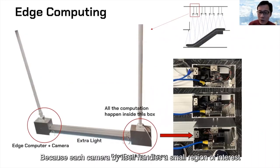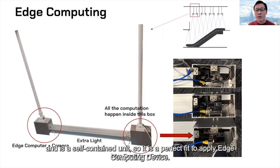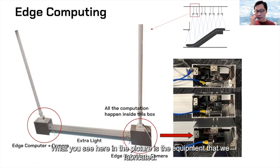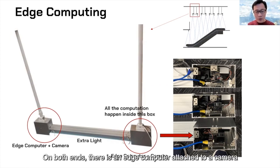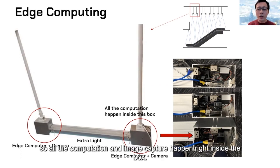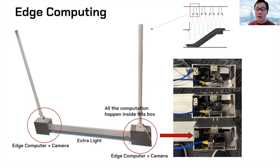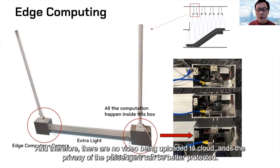Based on this observation, we designed a system where an array of low-resolution cameras would be installed right on top of and along the escalator. Each camera was tuned to capture a specific narrow region where our classifier performs at its best accuracy. Because each camera handles a small region and is a self-contained unit, it's a perfect fit for edge computing devices. The equipment we fabricated has an edge computer attached with cameras on both ends, so all computation, camera, and image capture happen right inside the box. No video is uploaded to the cloud, and the privacy of passengers is better protected.